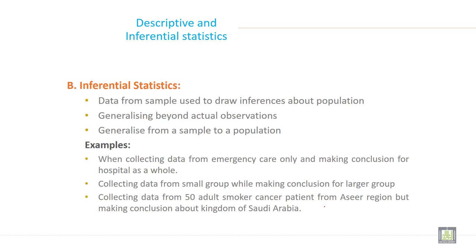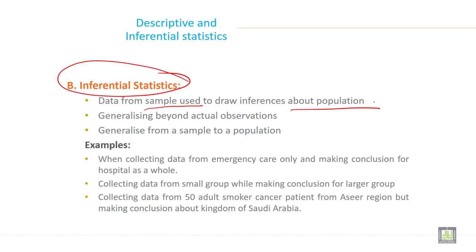Another type of statistics is called inferential statistics. Data from a sample is used to draw inferences about a population — generalizing beyond actual observation, from a sample to a population.